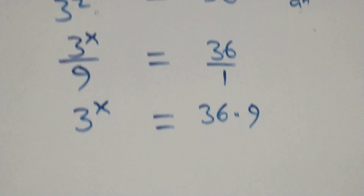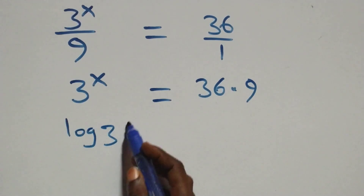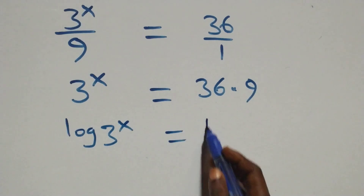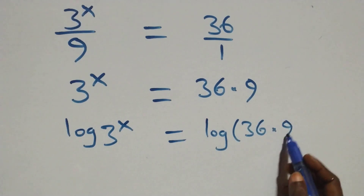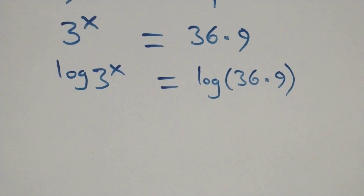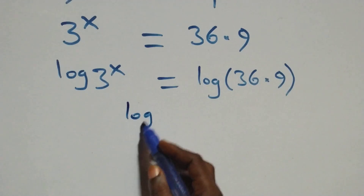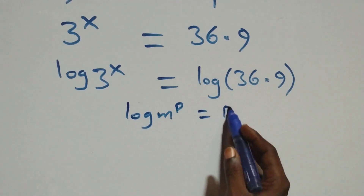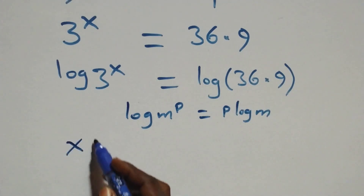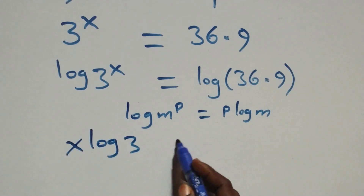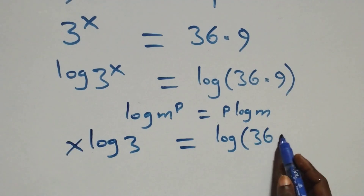The next step, we take the log on both sides. So log of 3 raised to power x equals log of 36 times 9. We then apply the power rule of logarithms: when we have log m raised to power p, this is the same as p times log m. That gives us x log 3 equals log of 36 times 9.